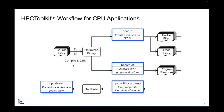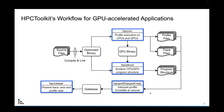So you compile and link your binaries the way you normally do. Then there are tools: HPC Run, HPC Struct, HPC Prof, and HPC Viewer. This is our workflow designed two decades ago for CPU applications, and when you're using GPU applications you use the same set of tools — except that our measurement tool also records GPU binaries that it observes being loaded into the GPU at runtime, and we analyze these as part of our post-mortem analysis.